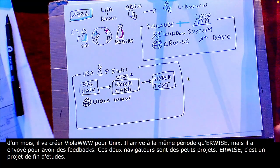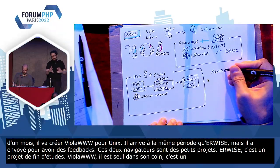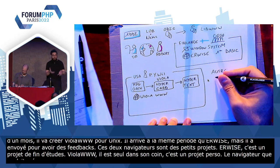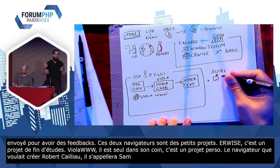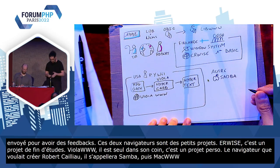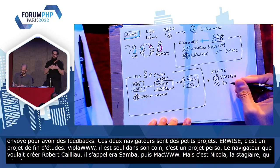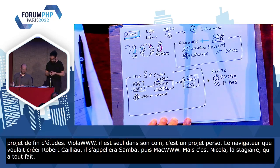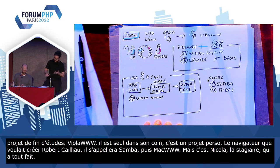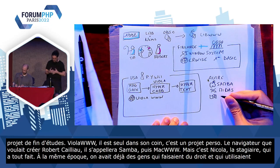Il y en a eu plein d'autres des navigateurs à l'époque. Le navigateur que voulait créer Robert Cailliau — le premier navigateur pour Mac — il s'appellera Samba, puis Mac WWW. Et devinez quoi ? Évidemment, c'est Nicolas Pellot, la stagiaire, qui a tout fait. Ensuite, on a eu Midas, un navigateur pour X Windows System qui vient du SLAC. Ils ne l'ont jamais partagé en dehors du SLAC, donc tout le monde s'en fiche. À la même époque, on avait déjà les gens qui faisaient du droit — ils utilisaient Windows, déjà à l'époque. Donc, ils ont créé un navigateur à l'école de droit de Cornell qu'ils ont appelé Cello. Pareil, tout le monde s'en fiche.